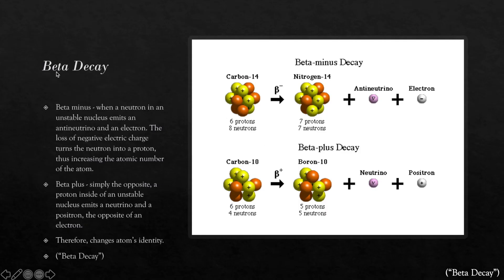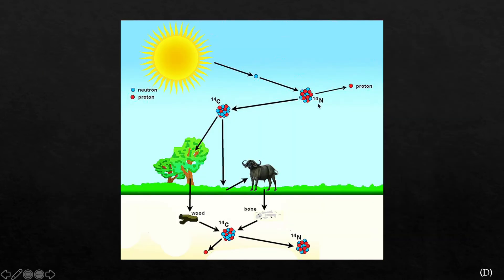Beta decay is a little more difficult to explain simply. There are two forms of beta decay, beta minus decay and beta plus decay. Beta minus is when a neutron in an unstable nucleus emits an antineutrino, which is a lepton that we will discuss in a later section, and an electron, another lepton. The loss of negative electric charge turns the neutron into a proton, thereby increasing the atomic number of the atom. This type of decay is actually rather famous, with its being the foundation of carbon dating, the decay of an unstable carbon-14 isotope into a more stable nitrogen-14 isotope.